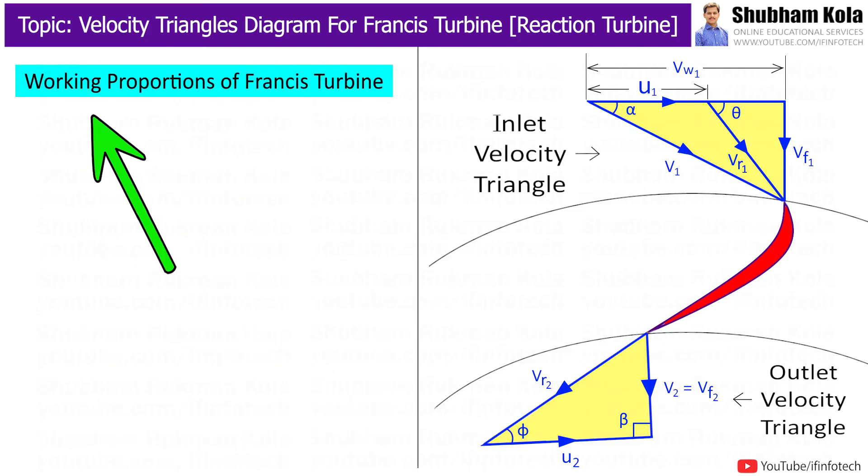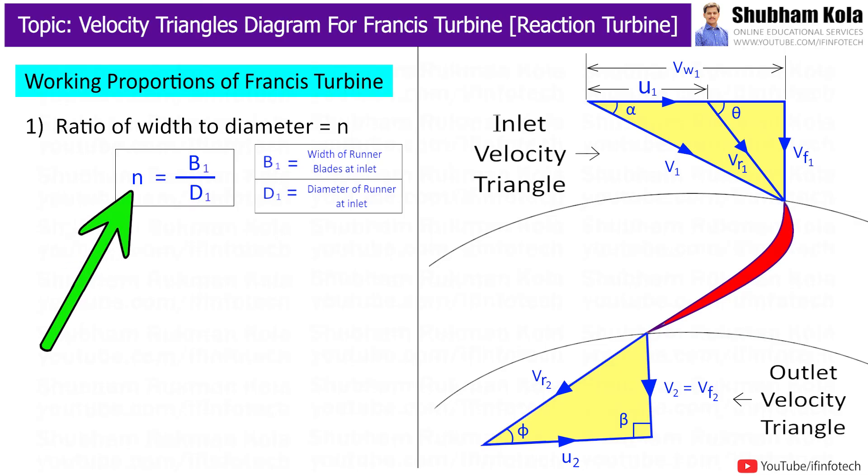Now we will see the working proportions of Francis turbine. In that, first one is ratio of width to diameter, represented by small n. And this value ranges from 0.1 to 0.45.